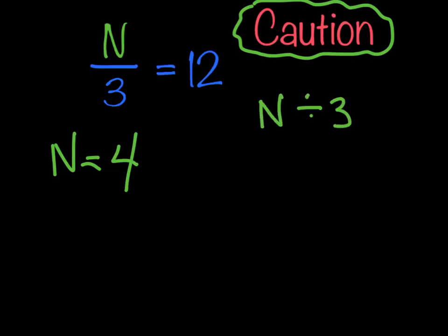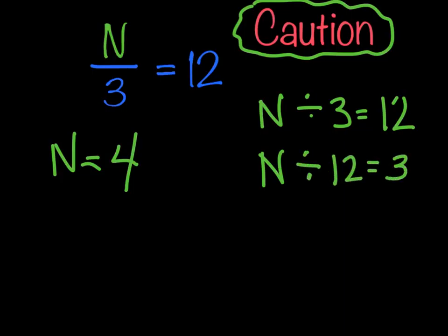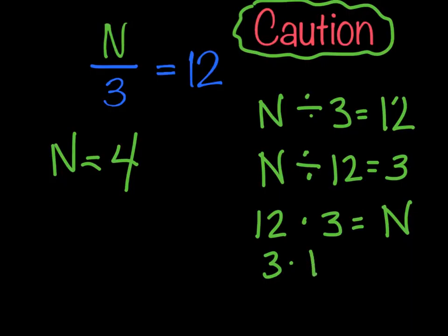Solving 8 divided by 2 gives me 4, so p equals 4. Putting it back into my problem: 8 divided by 4 equals 2. That makes sense, so my answer is correct.